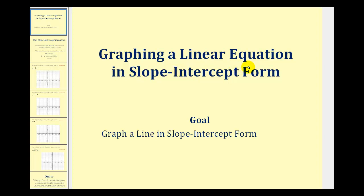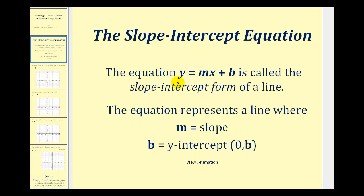Welcome to a lesson on graphing a linear equation in slope-intercept form. The equation y equals mx plus b is called the slope-intercept form of a line. This equation represents a line where m is equal to the slope of the line and b is equal to the y-intercept of a line.